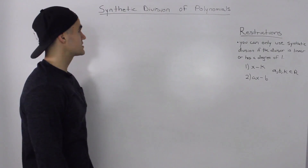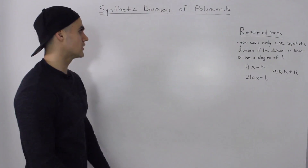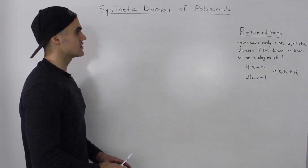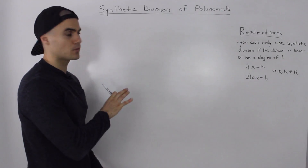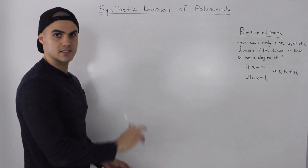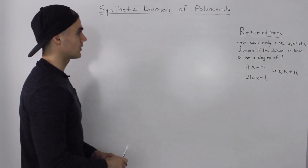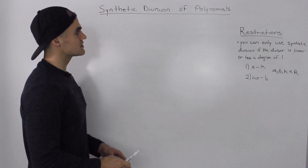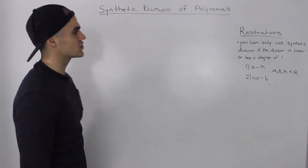What's up guys? So let's talk about synthetic division of polynomials. Synthetic division is just another way, other than long division — which we already went through — to divide polynomials and to get a quotient and a remainder. And it's a lot quicker to use than long division; however, it does come with some restrictions.